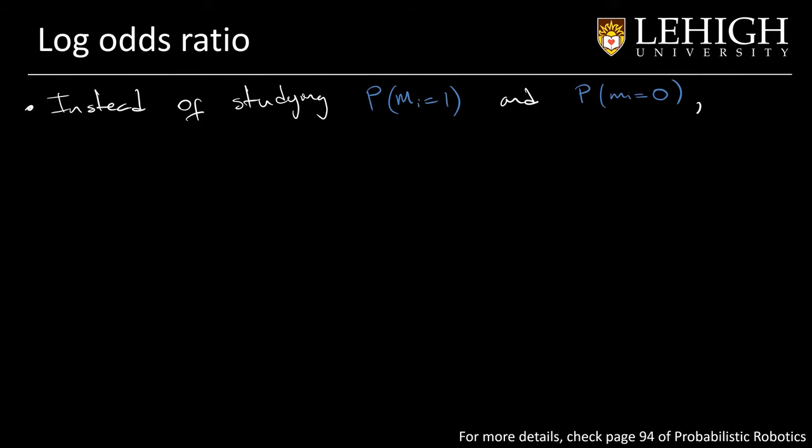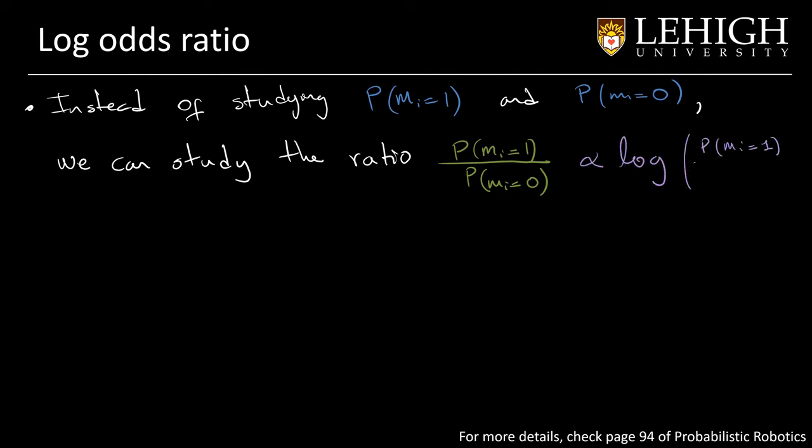So instead of studying the probability of a cell being occupied or not being occupied independently, what we are going to study is the ratio of the probability of being occupied over not being occupied. We want to know how many times one is more likely than the other. We can apply the log function and we know that that value will be proportional. But the log function will give us additional properties. And having applied the Bayes' theorem and some arithmetic equations, we can use the measurement model to obtain a function. This function, or we can call it the log odds function, will depend on three terms.